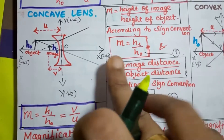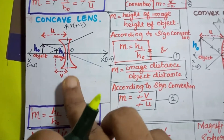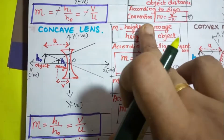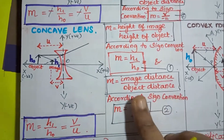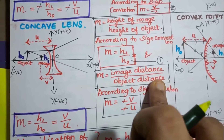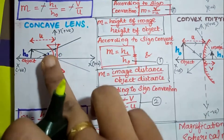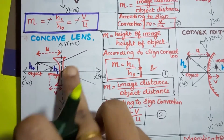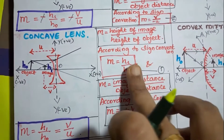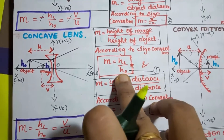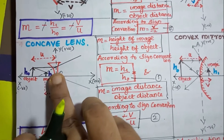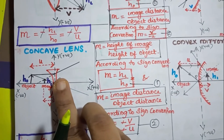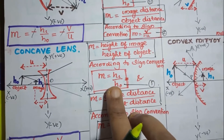Next, for the concave lens — this is the ray diagram for image formation in a concave lens. Once again, we have two formulas: height of the image over height of the object, and image distance over object distance. The height of the image is erect, so it lies along the positive side of the y-axis, giving H1. The height of the object is also erect, so it also lies on the positive side of the y-axis, giving H0.